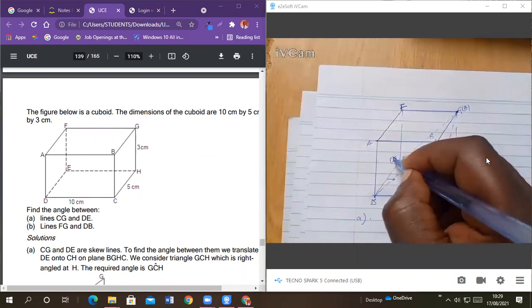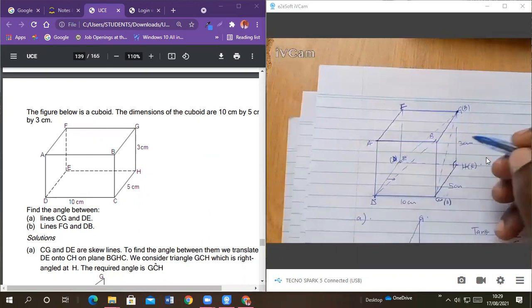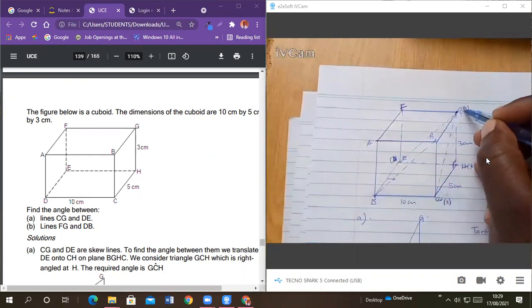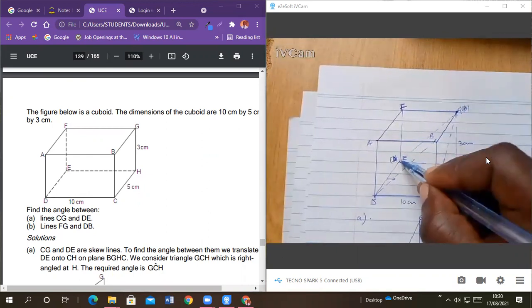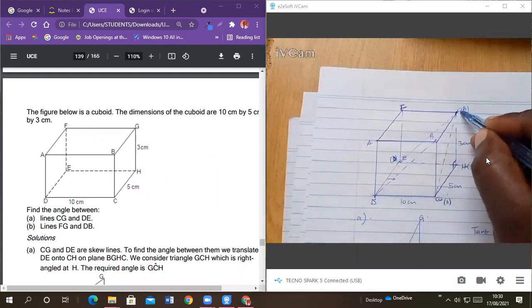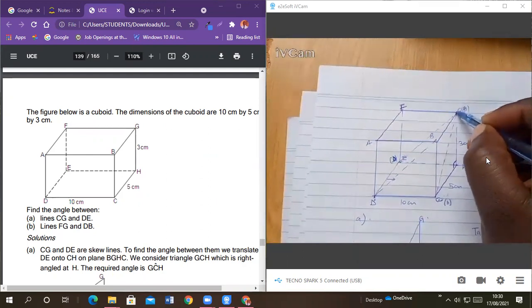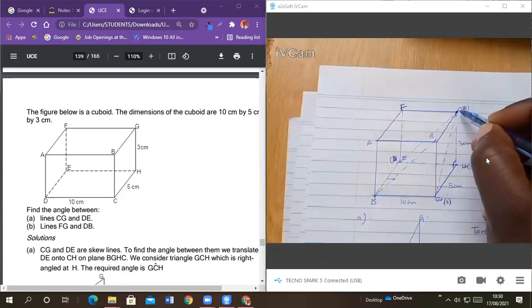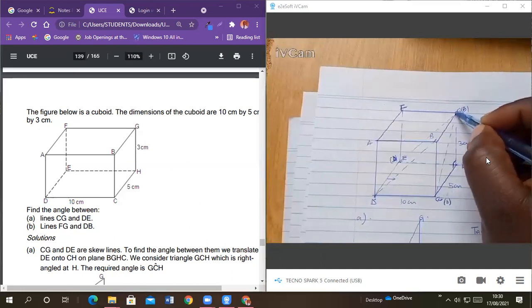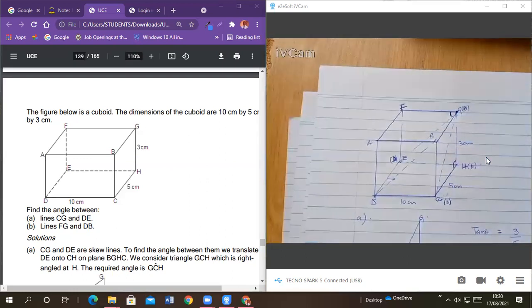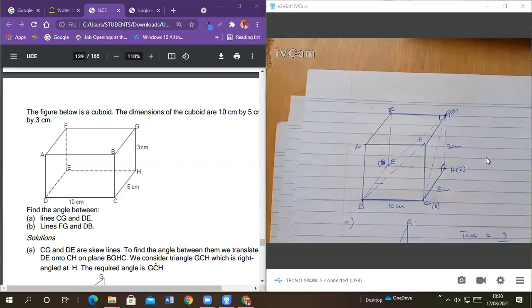Now, what we are seeing is that DB has made FG to this point here. So D, which was here, which was here, we shifted there, and B, which was here, we shifted here. So that we have DB here. And it has coincided with the D at this point. So the angle they want is this angle here.